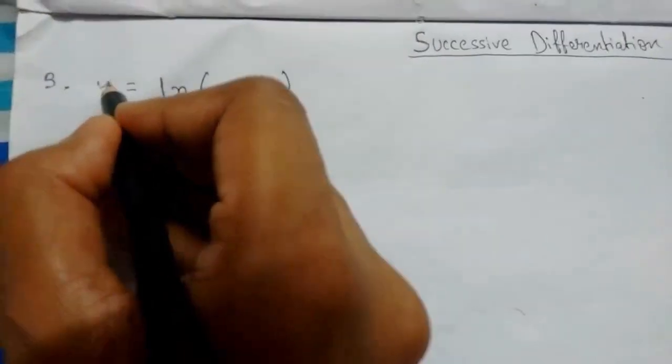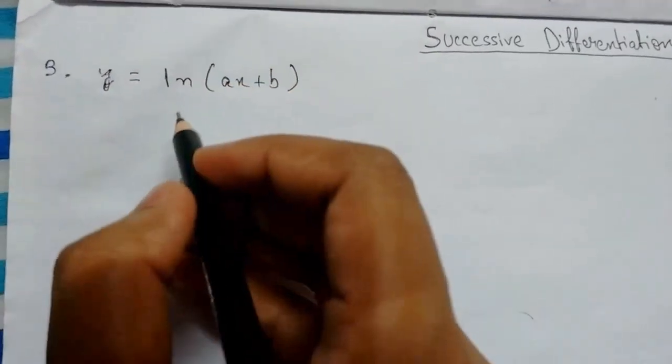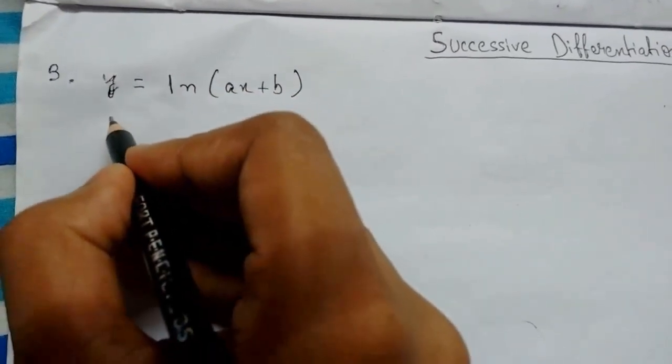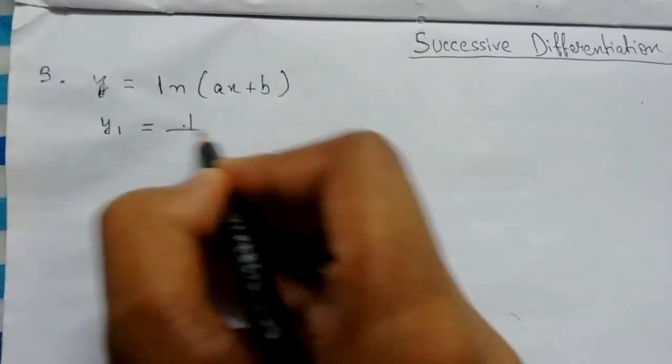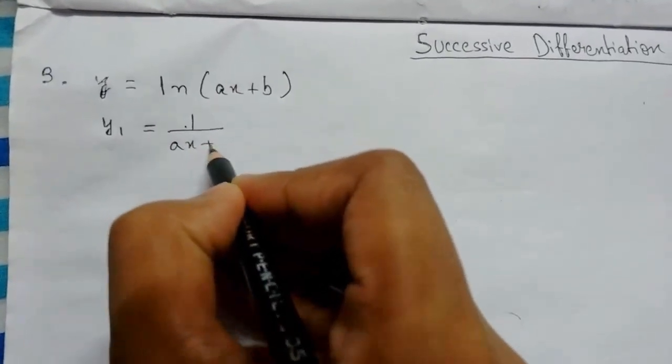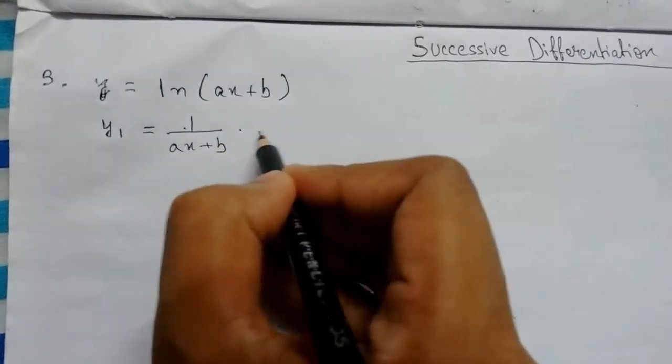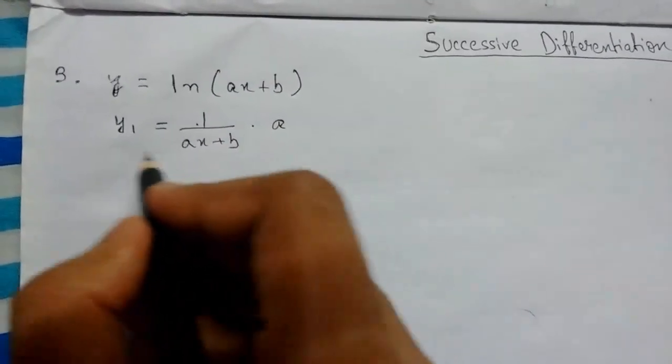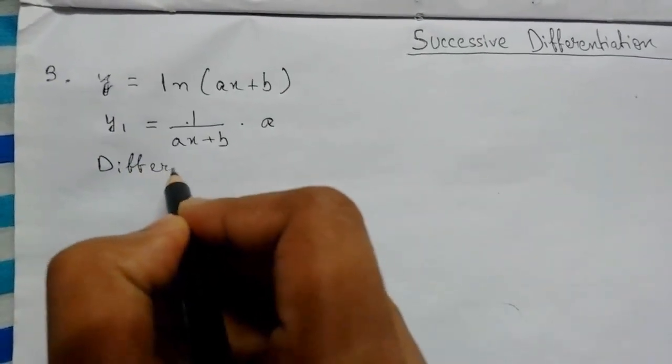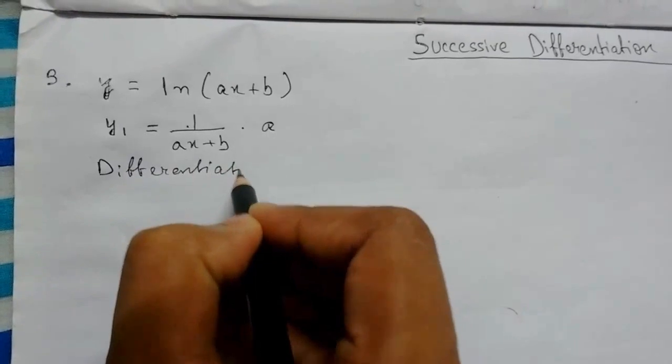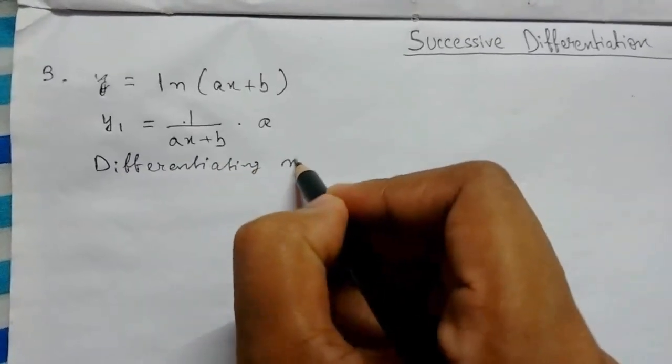To find the nth derivative of y, let me differentiate it for the first time. y₁ will equal 1 over (ax + b), and the differentiation of ax is a.